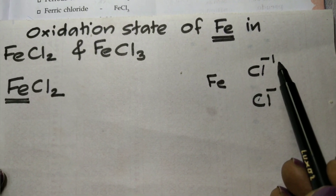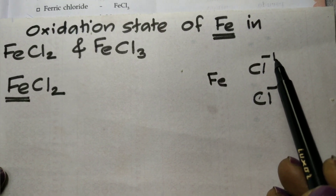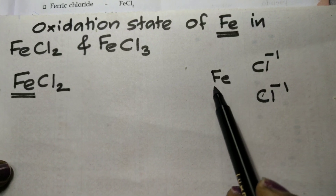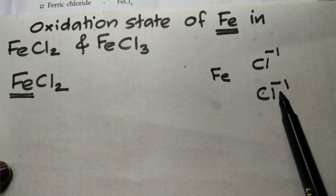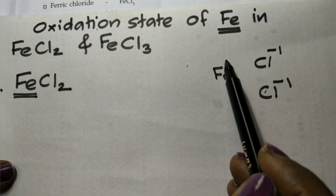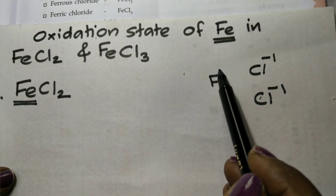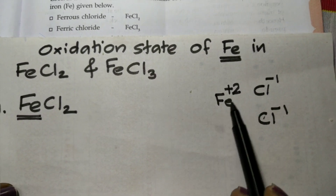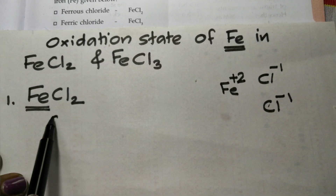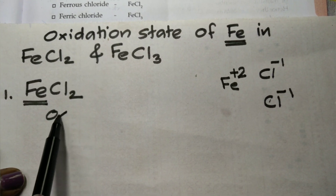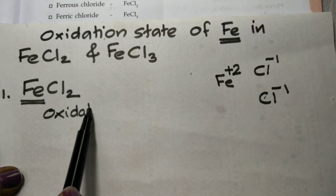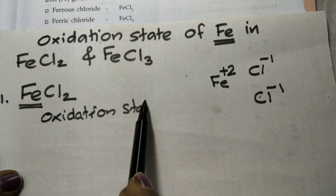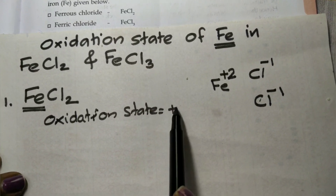Chlorine gains electrons, so Fe donates 2 electrons to chlorine. Because Fe donated electrons, the oxidation number of Fe is plus 2.